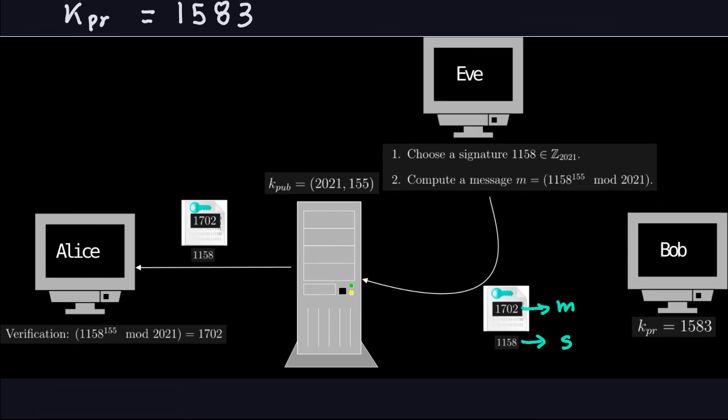That's basically all I have to say about the RSA signature. In the next video, we'll talk about another signature scheme — the El Gamal signature — which is also based on discrete logarithms but will be a little bit different from what we just saw. I'll see you in the next video.